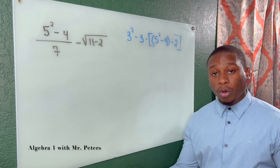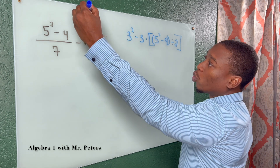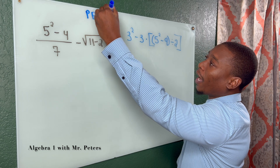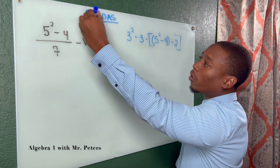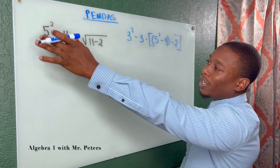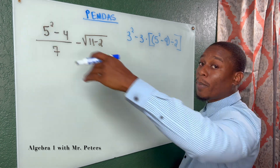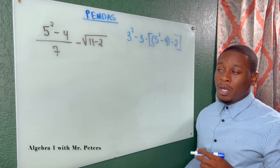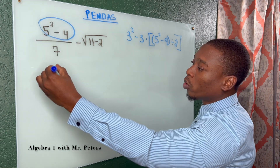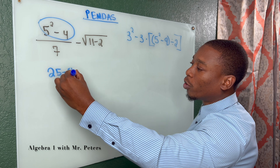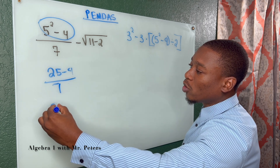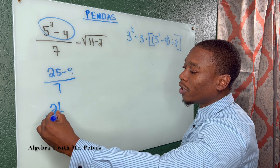The first concept is order of operations. We're talking about the acronym PEMDAS and how we solve expressions in order. In problem number one, let's focus on the top half of that fraction. Before we can divide, we have to take care of this. So we're going to have 25 minus 4, all over 7. When we simplify this, we're going to get 21 over 7.